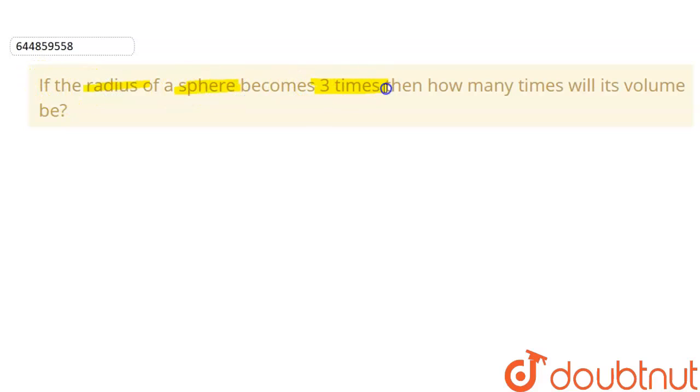The question is: if the radius of a sphere becomes three times, then how many times will its volume be? So we are given that the radius of the original sphere becomes three times the original radius.